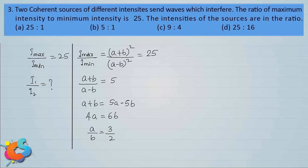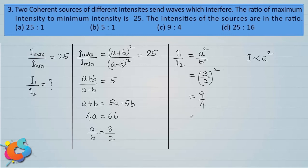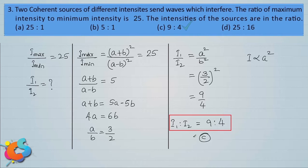The ratio of the intensities of the individual sources is I1/I2. Since intensity is proportional to amplitude squared, I1/I2 = (A/B)² = (3/2)² = 9/4. Therefore, the ratio of I1 to I2 is 9 to 4, and Option C is the correct answer.